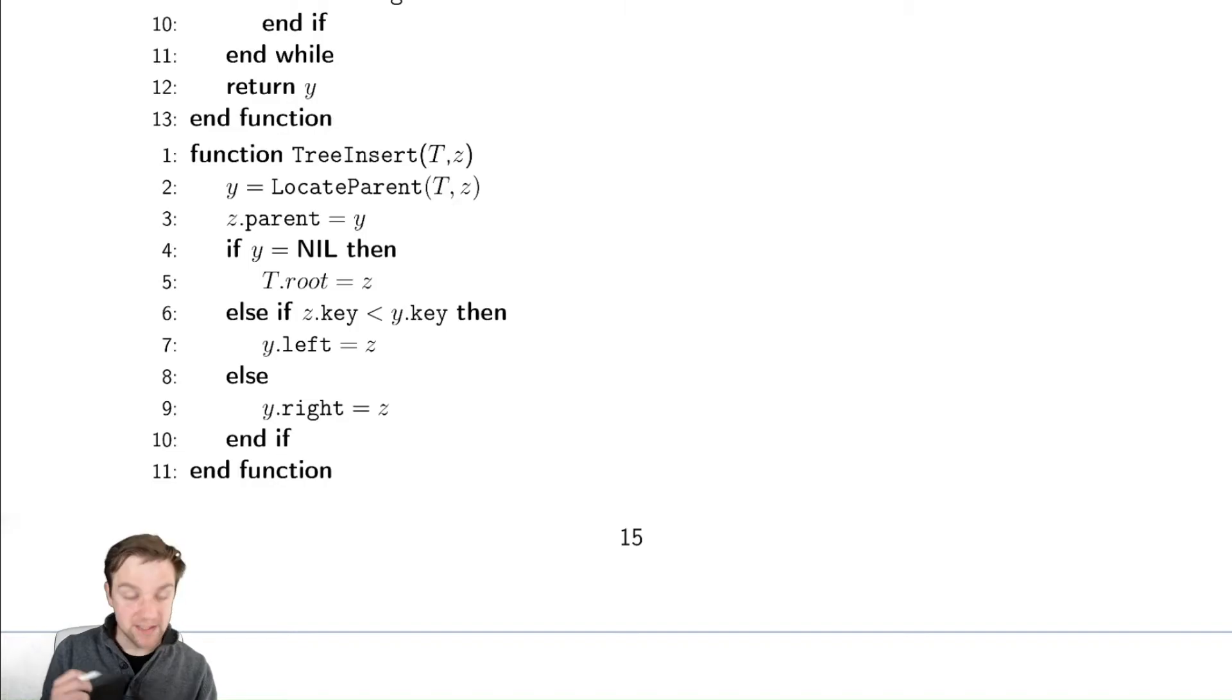And if y is nil which is possible in that code that we gave above we have just actually started building a tree so we're going to need to assign z to be the root. Why do we have this? Well if you start with an empty binary search tree you need to account for that in your code.